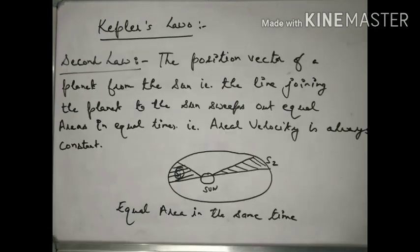The second law states that the position vector of a planet from the sun — that is, the line joining the planet and the sun — sweeps out equal areas in equal intervals of time. If areas S1 and S2 are swept in the same time interval, they are equal. When we talk about equal area and equal time, we get the areal velocity, which is always constant.